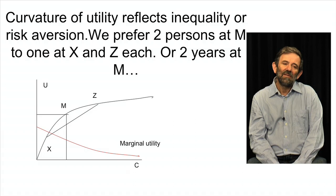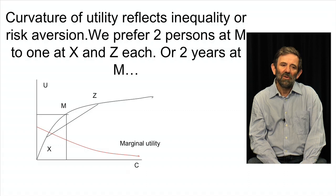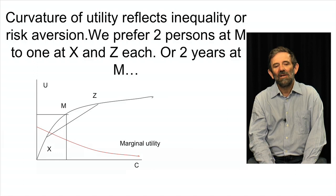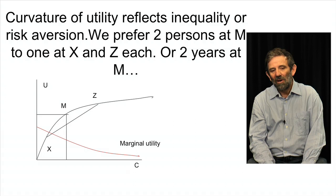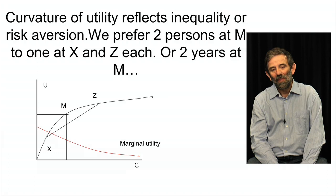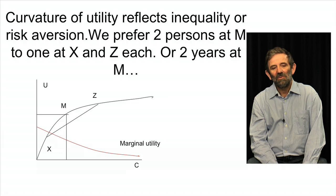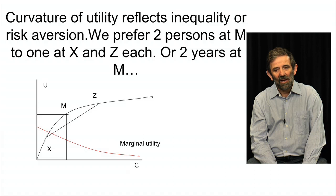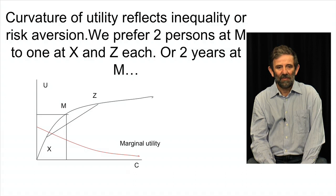So that is the meaning of this curvature of this utility function. You can see here the marginal utility is falling. The marginal utility of an extra dollar for a really rich person is much smaller than for a poor person. I think that is fairly intuitive. This also means that the curvature of the utility function reflects our aversion to risk and our aversion to inequality. We can illustrate this by thinking about the point M. We would prefer being two years at the point M than having one year at the year X and one year at the year Z.